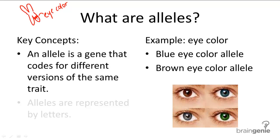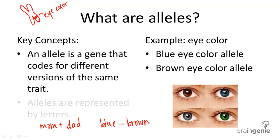Every trait that you show is coded for by two alleles — one from your mom and one from your dad. So let's say your mom gives you the blue eye allele and your dad gives you the brown eye allele. That means your genetic makeup will be the blue eye and brown eye allele, and we'll talk about the significance of this later.